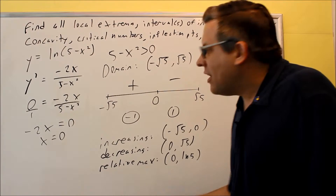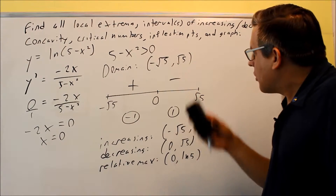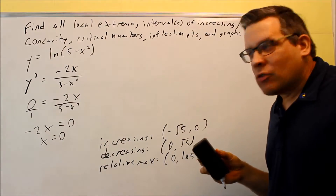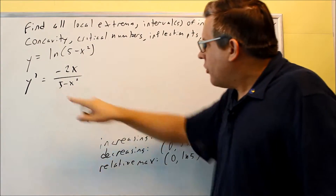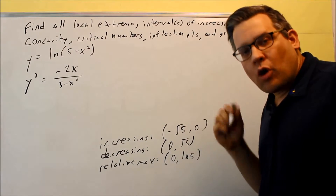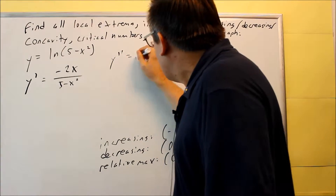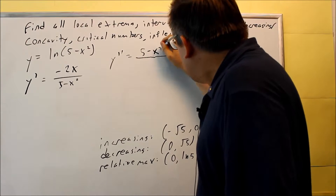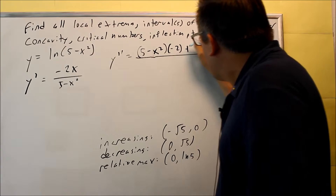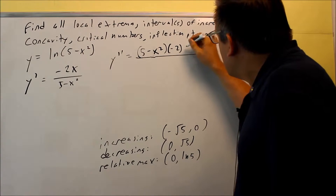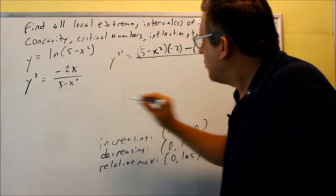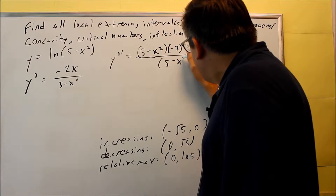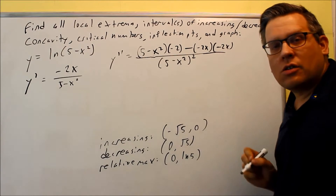Next, we're going to find the second derivative to determine concavity and any inflection points. Our domain is still between negative root 5 and root 5. Using the quotient rule on negative 2x over (5 minus x squared), the second derivative is: the bottom (5 minus x squared) times the derivative of the top (negative 2), minus the top (negative 2x) times the derivative of the bottom (also negative 2x), all over the bottom squared.